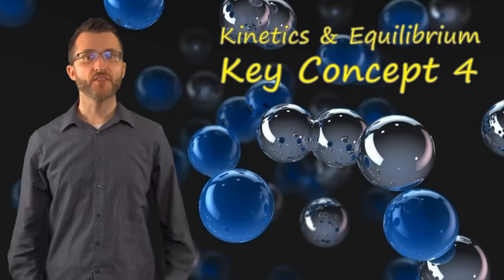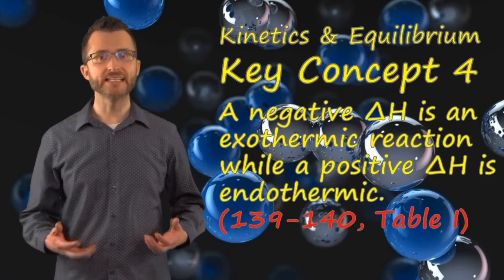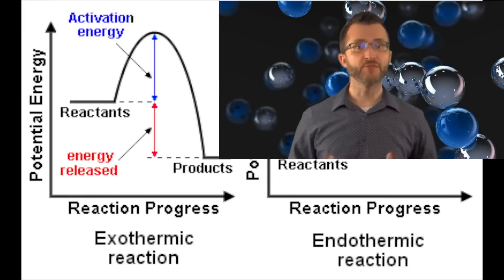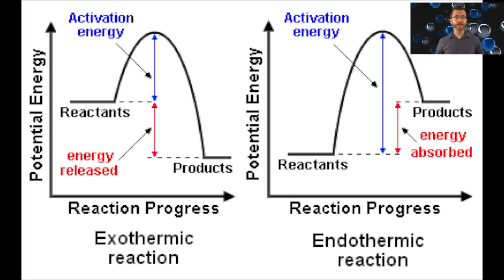Kinetics in Equilibrium, Key Concept 4. The heat of reaction delta H equals the potential energy of the products minus the potential energy of the reactants. A negative delta H is an exothermic reaction, while a positive delta H is endothermic. If we have a negative delta H, we are exothermic overall, which means we are releasing energy. On a potential energy diagram, an exothermic reaction starts high and ends low. An endothermic reaction has a positive delta H — we are absorbing energy overall — and the PE diagram starts low and ends high. Always remember: delta H equals the heat of the products minus the heat of the reactants.